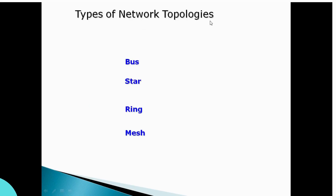Types of networking topologies — what is the meaning of topologies? Topology refers to the type of networking structure. We will divide the networking structure into topologies. The main types are: bus topology, star topology, ring topology, and mesh topology.